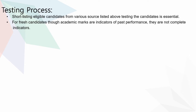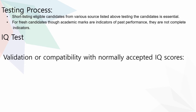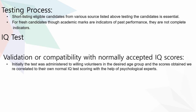Now coming to the testing process. Shortlisting eligible candidates from various sources through testing is essential. For fresh candidates, academic marks are indicators of past performance, but they are not complete indicators. After that, an IQ test is administered, followed by validation or compatibility with normally accepted IQ scores. Initially, the test was administered to willing volunteers in the desired age group, and the scores were correlated to their normal IQ test scoring with the help of psychological experts.